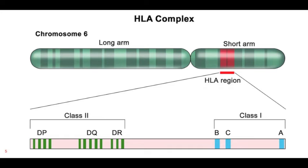HLA-DRB1 is a heterodimer containing an alpha and beta chain comprising part of the MHC class 2 molecule that exists on antigen-presenting cells of the immune system. The MHC class 2 molecule of APC presents a portion of protein from phagocytised antigen to CD4 T helper cells to initiate a cell-mediated immune response. A polymorphism of the HLA-DRB1 gene, specifically the HLA-DRB1*1501 allele, is identified as the major genetic predisposition link to the development of MS.